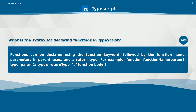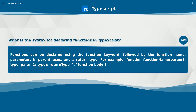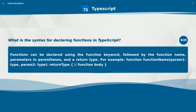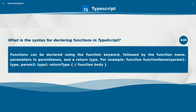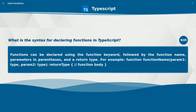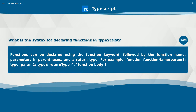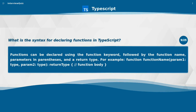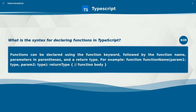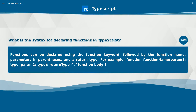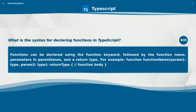What is the syntax for declaring functions in TypeScript? Functions can be declared using the function keyword, followed by the function name, parameters in parentheses, and a return type. For example: function functionName(param1: type, param2: type): returnType { // function body }.